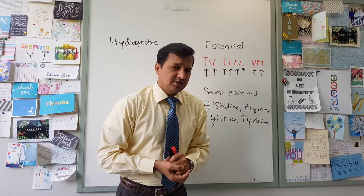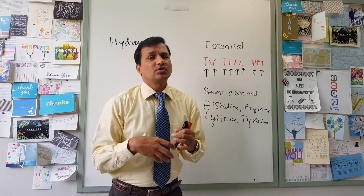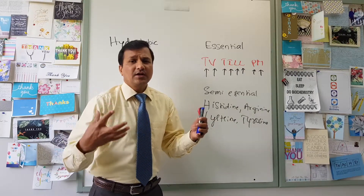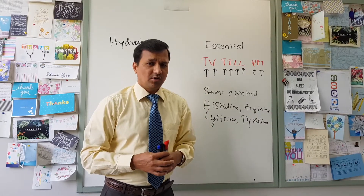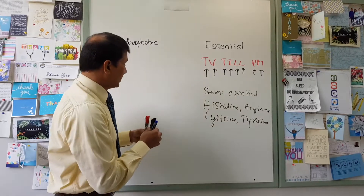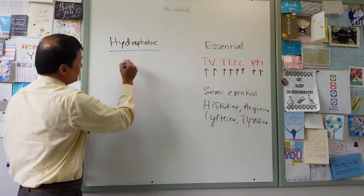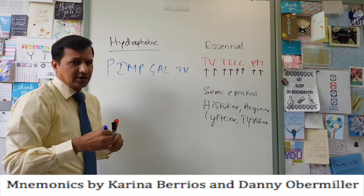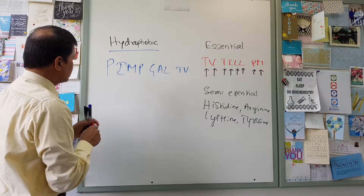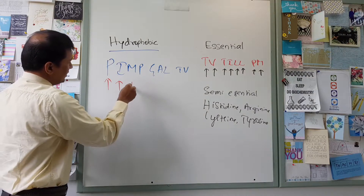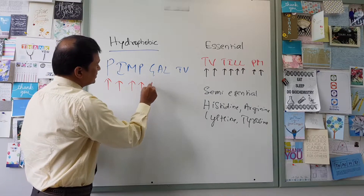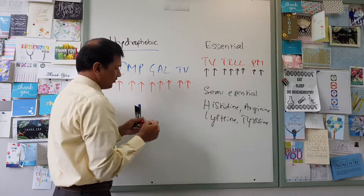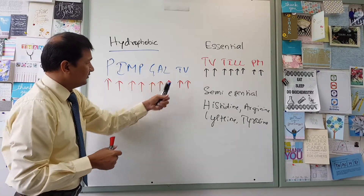Based on the side chain of amino acids, we can also classify amino acids into hydrophobic and hydrophilic. Hydrophobic amino acids cannot interact with water because their side chains cannot make hydrogen bonds with water. Hydrophobic amino acids can be remembered as PIMP-GAL-TV: P for phenylalanine, I for isoleucine, M for methionine, P for proline, G for glycine, A for alanine, L for leucine, T for tryptophan, and V for valine.